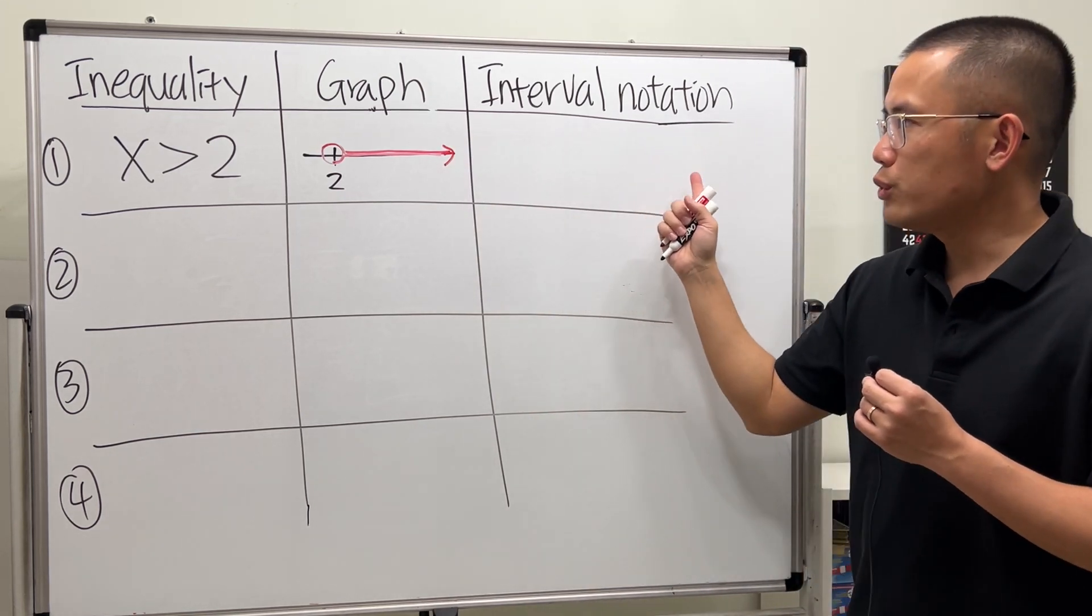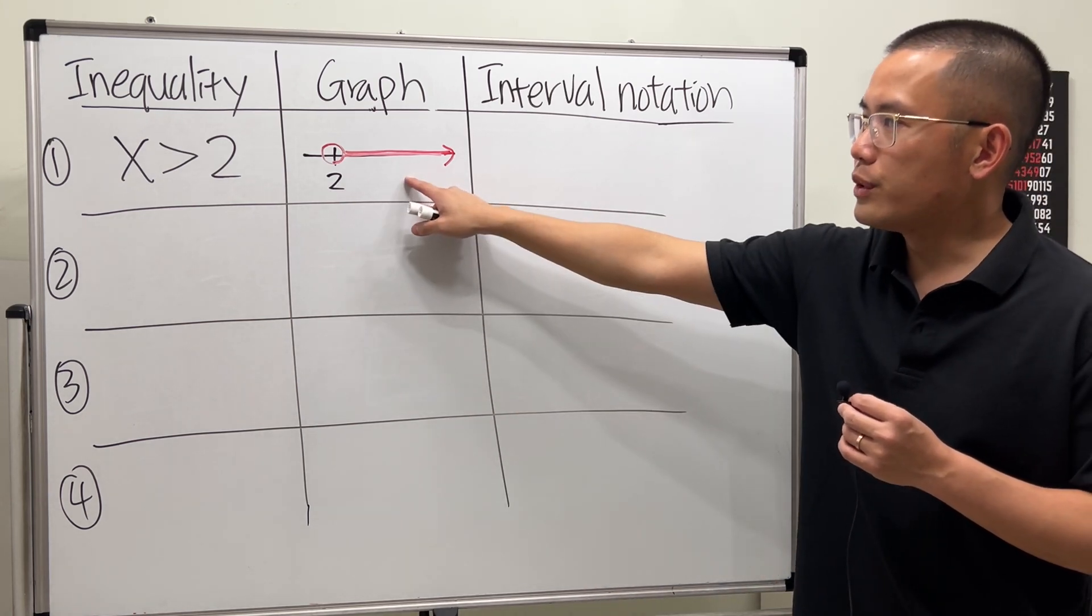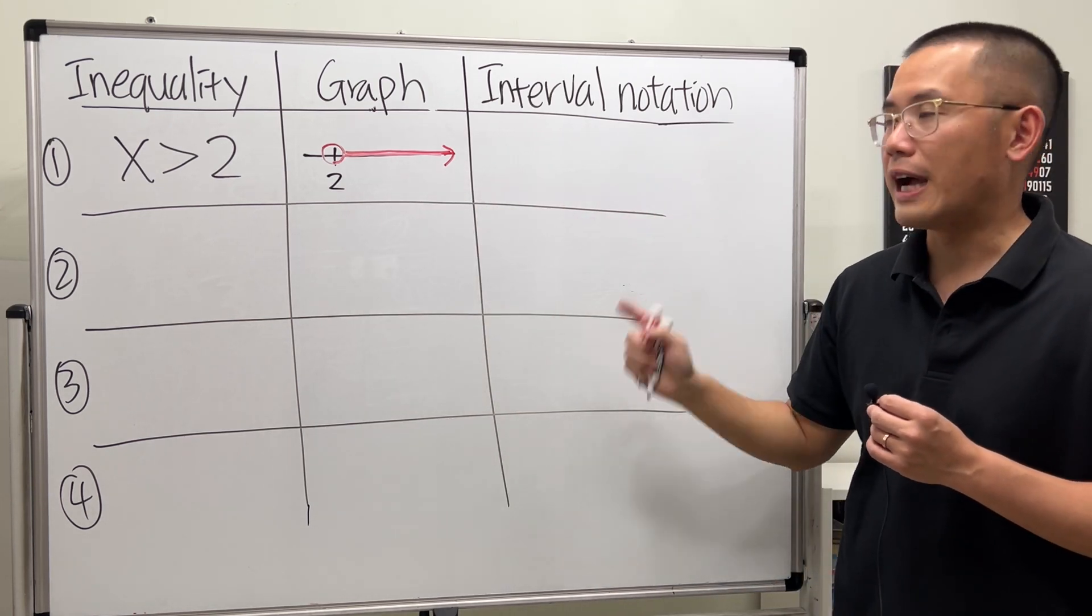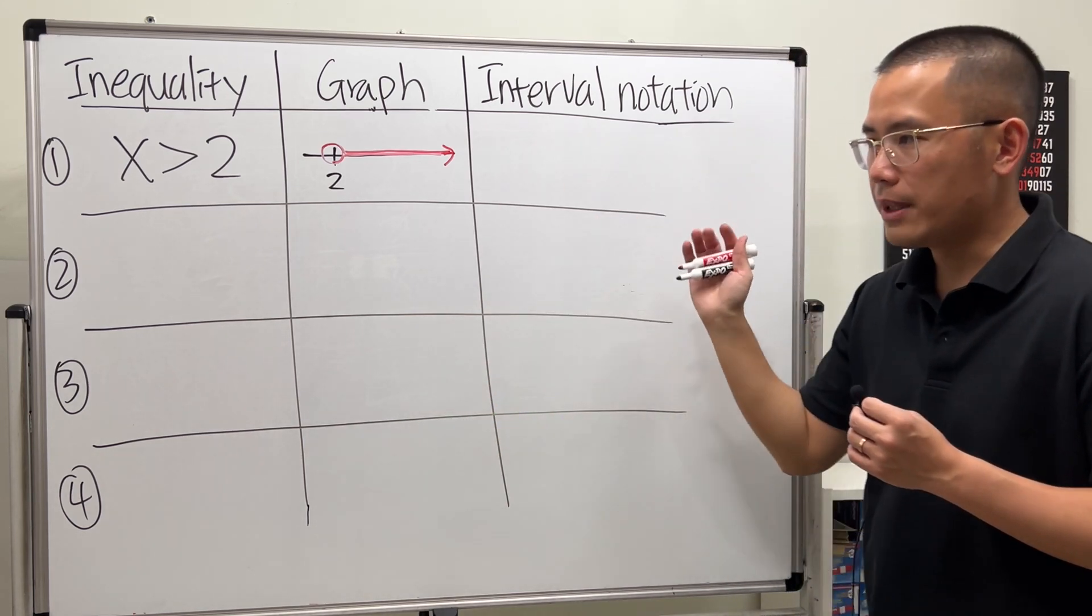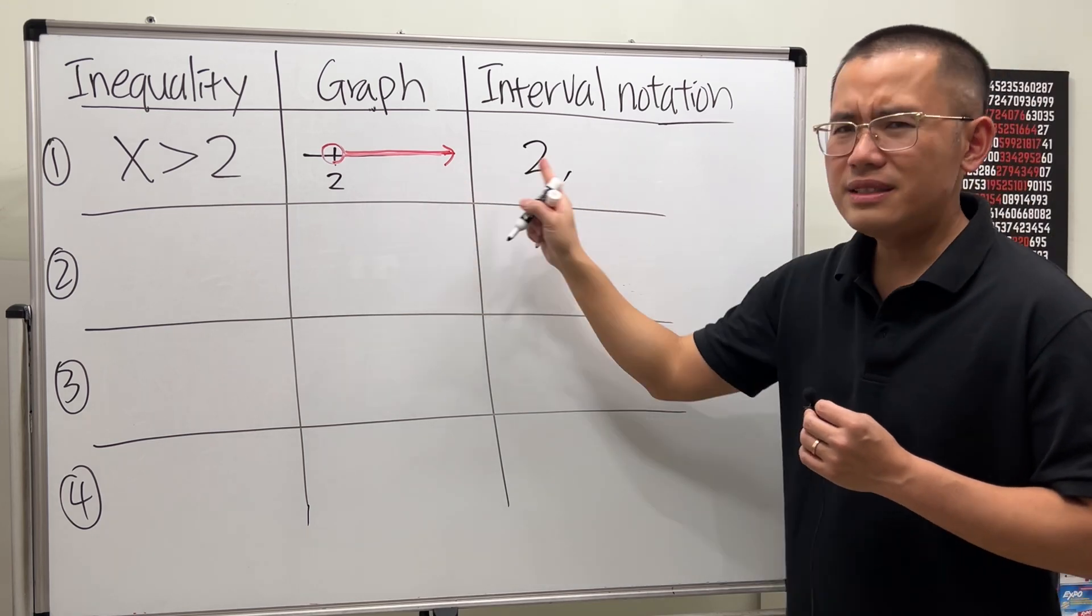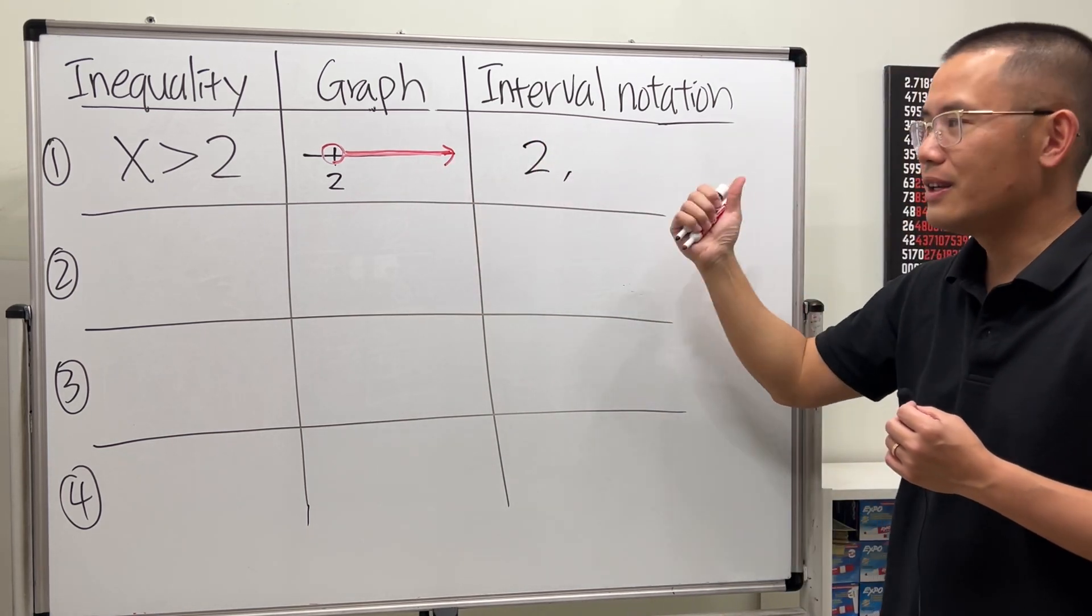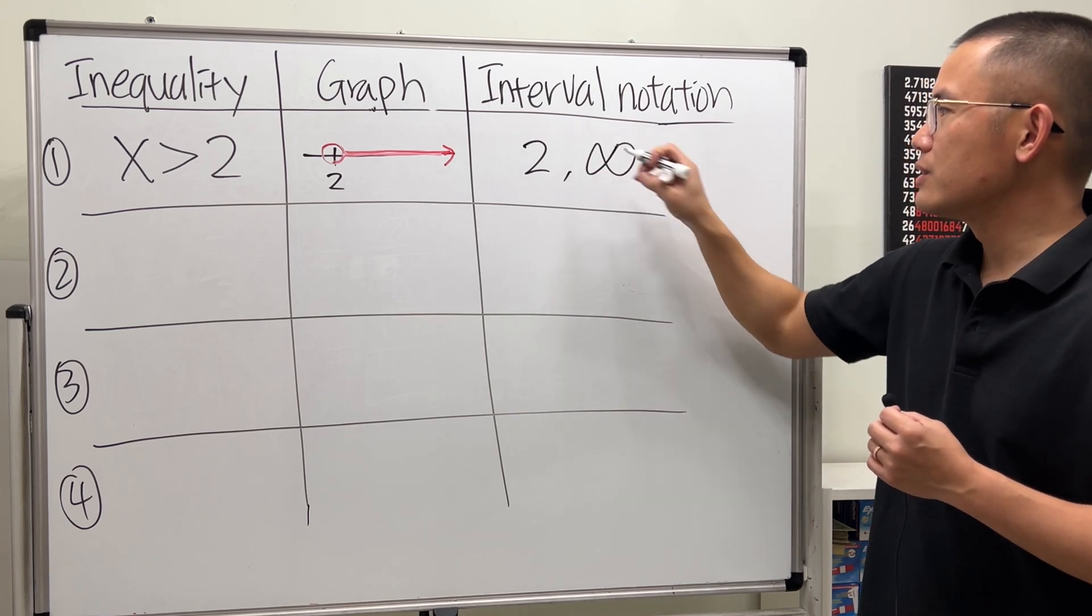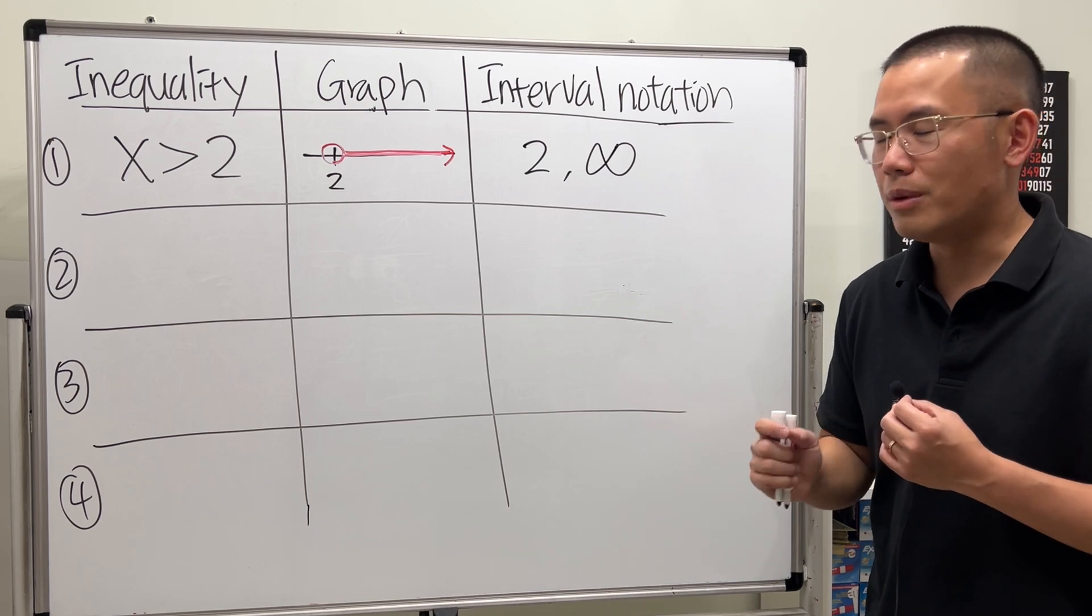Now, how do we write an interval notation for this? It's easier if you look at the graph and write interval notation, I will tell you that. You always want to put down the left end point and then the right end point. So we start at 2. But there's no right end point, right? Well, that's the idea of infinity. And that's positive infinity. So just like this, all the way to the right.